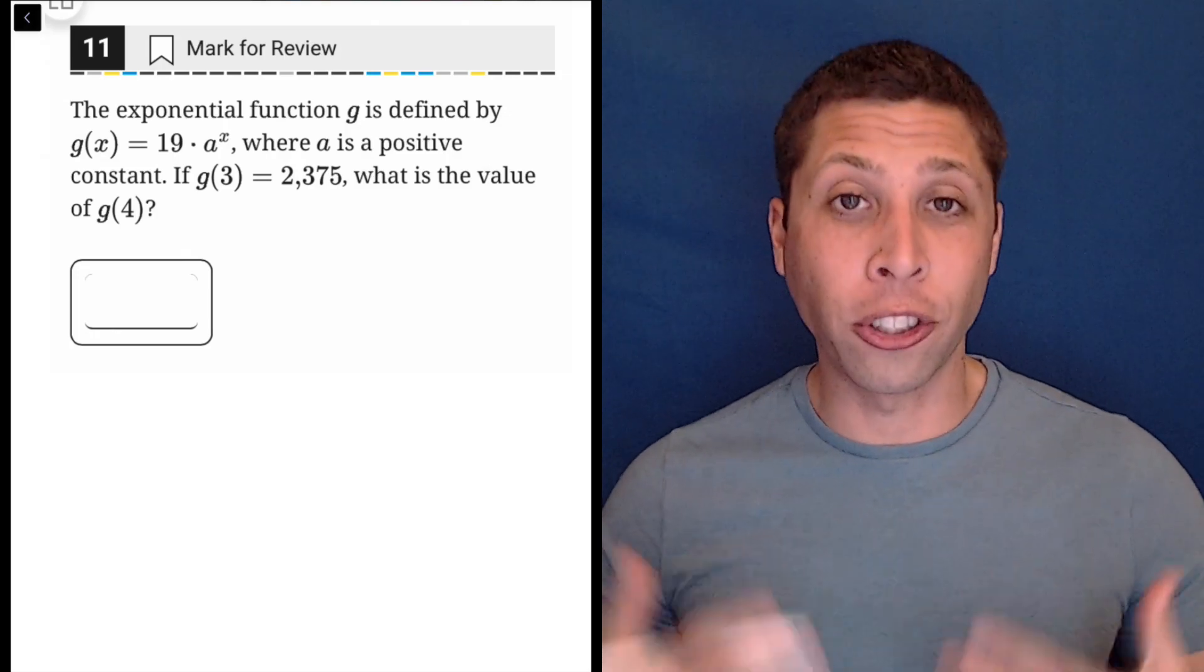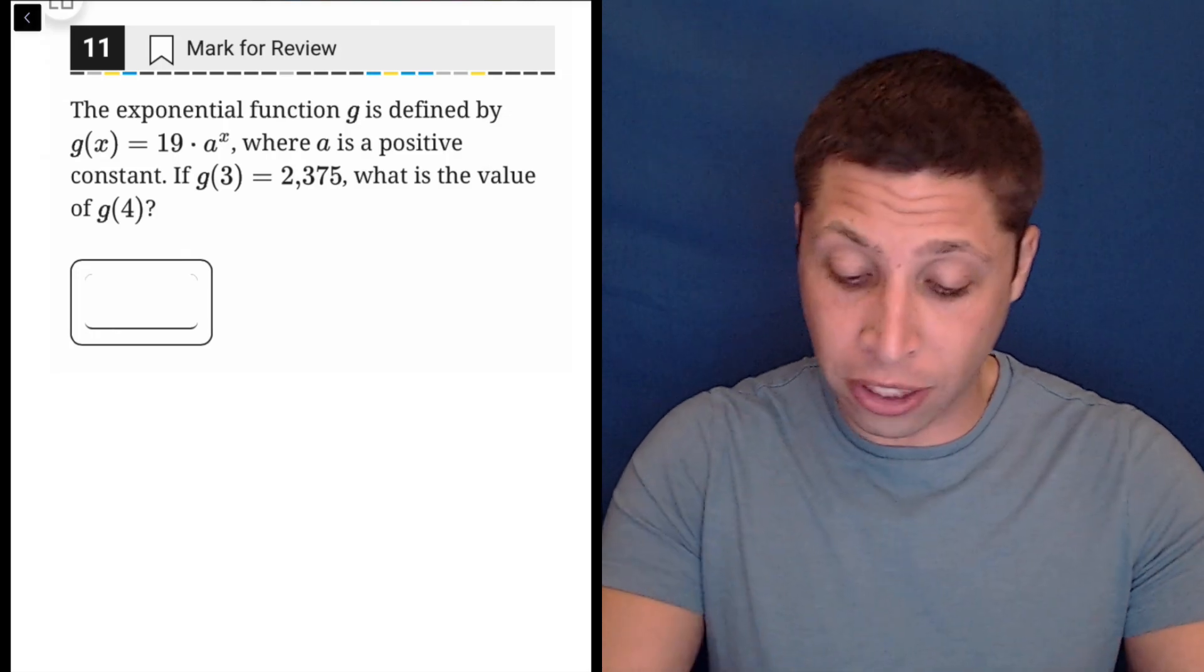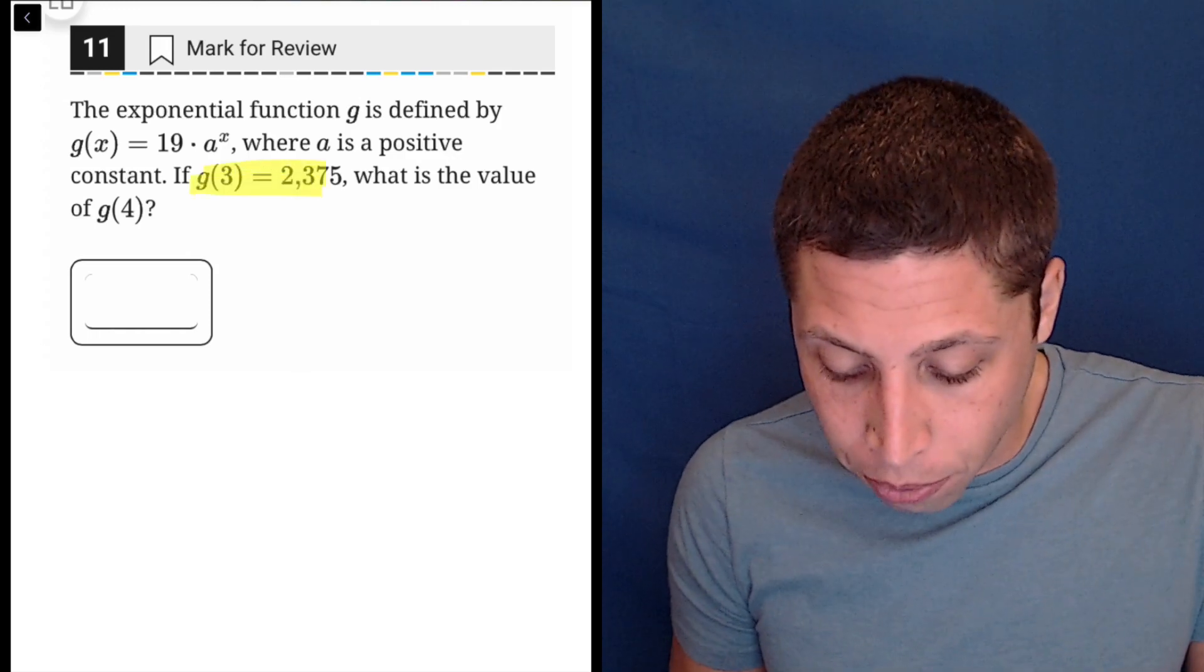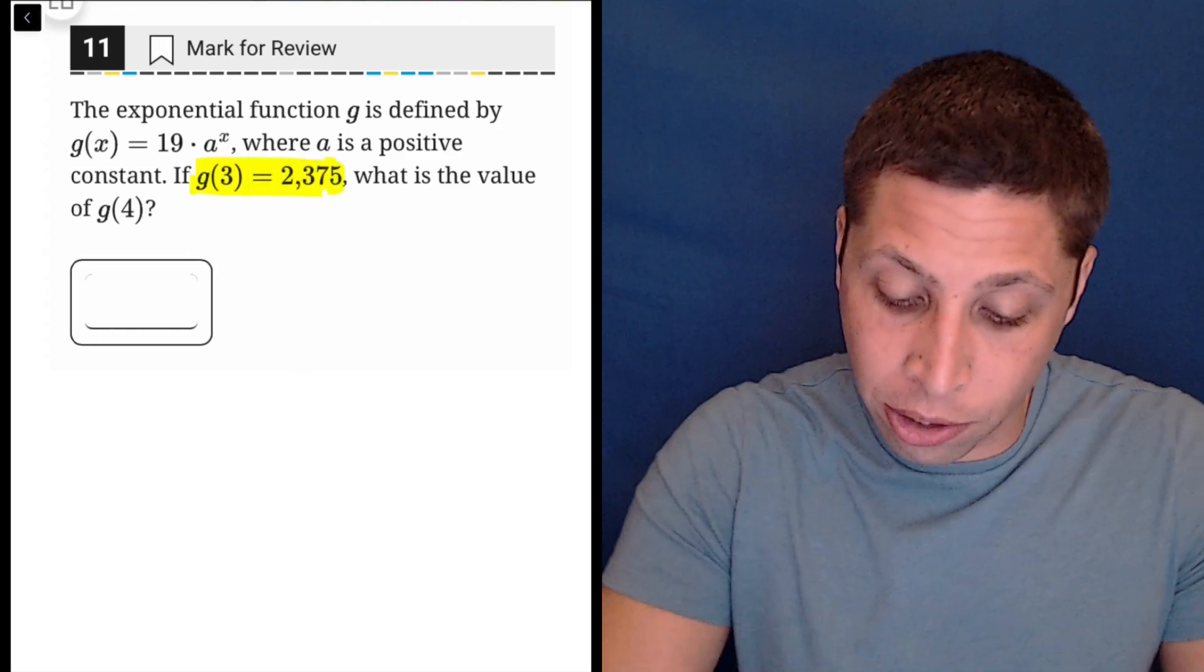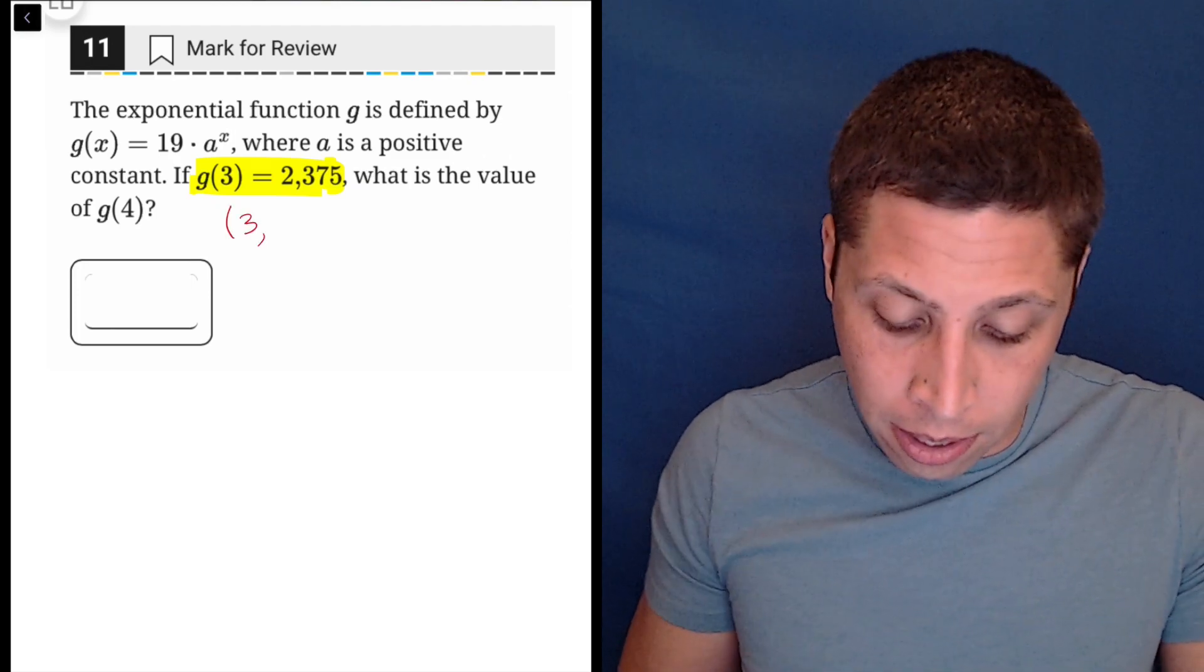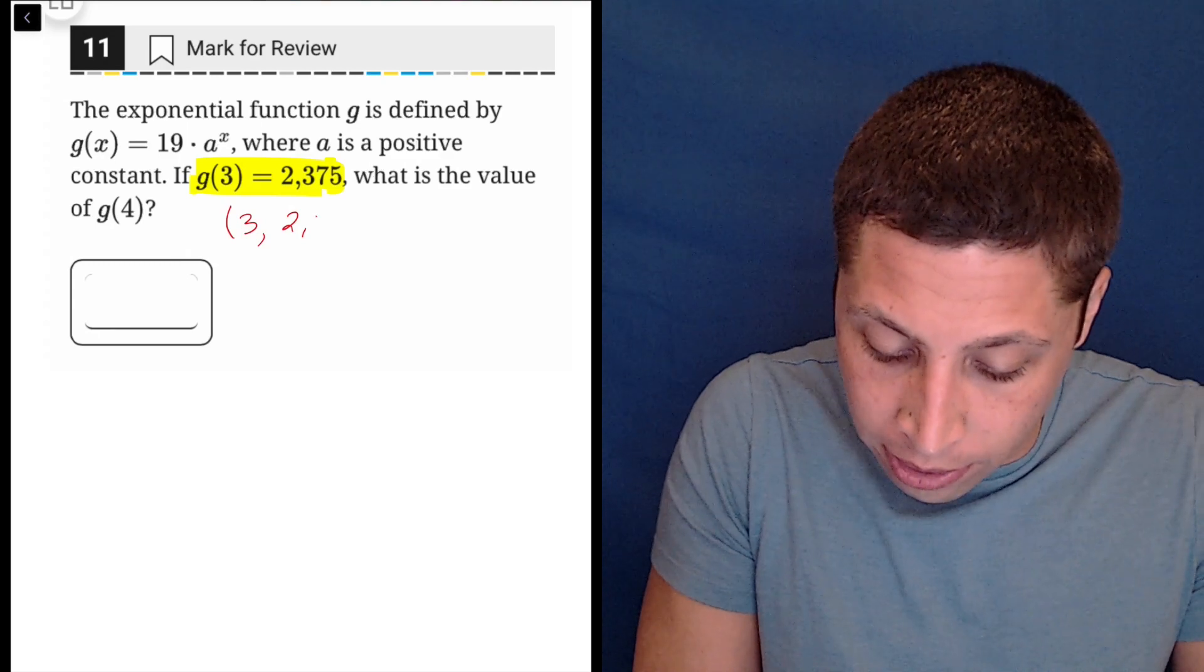This question is also testing function notation, so we just need to be able to read it and understand what it means. The first place I'll go is right here, g of 3 is equal to 2375. This is a point. This is telling us that when x is 3, the y coordinate is 2375.